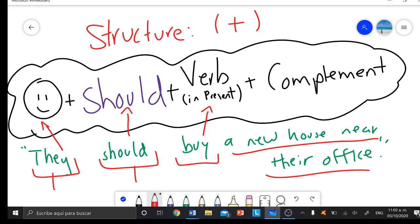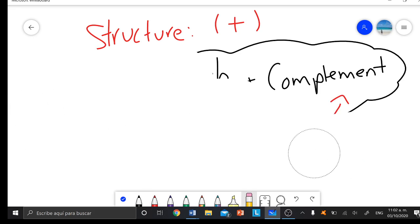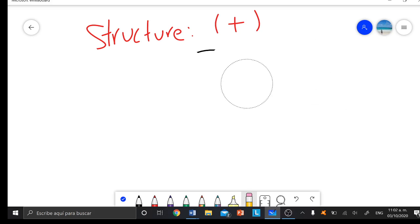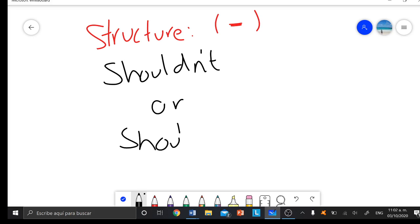The structure is very simple. We have subject, auxiliary 'should' or the modal verb 'should', then the verb in present, and all this is just the complement. In negative form, we actually have the word or the modal verb 'should' in negative form, and that one is very simple. We have two ways: shouldn't, or the other one will be 'should not'. If you write any of those ones, it means it's exactly the same.